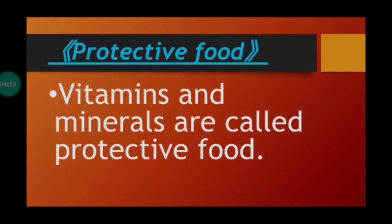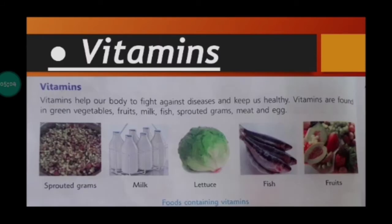Vitamins and minerals are called protective food. Vitamins help our body to fight against disease and keep us healthy. Vitamins are found in green vegetables, fruits, milk, fish, sprouted grams, meat and eggs.